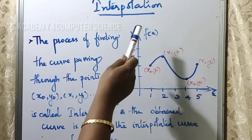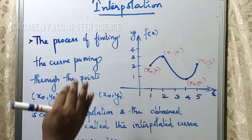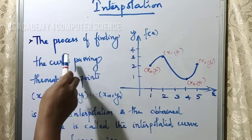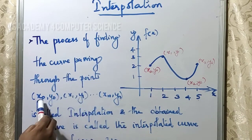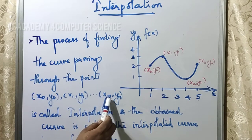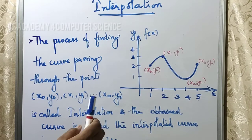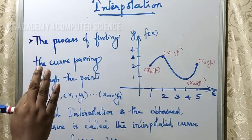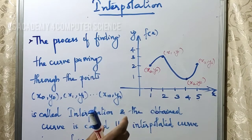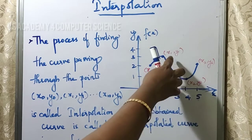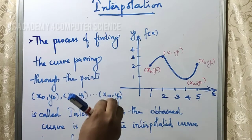Interpolation in mathematics is the process of finding the curve passing through the points (x0, y0), (x1, y1), (xn, yn), etc. Using the interpolation technique, we have a few points — without knowing all points — and from those we can find out the curve.